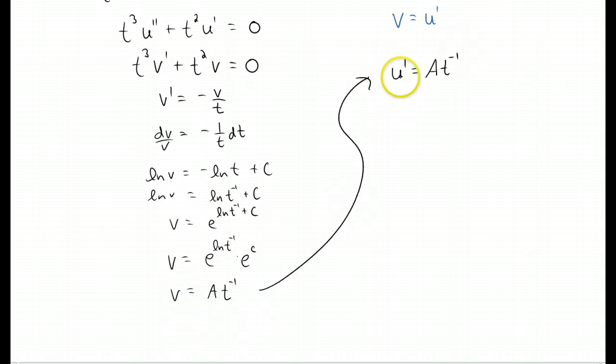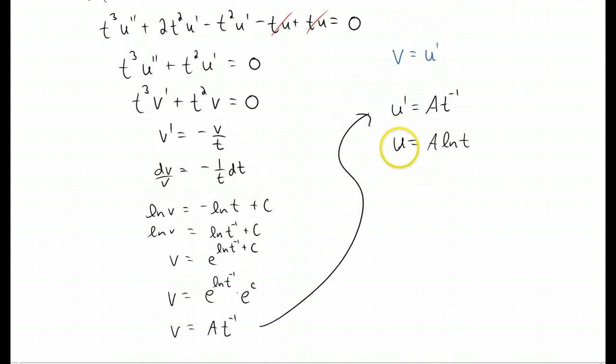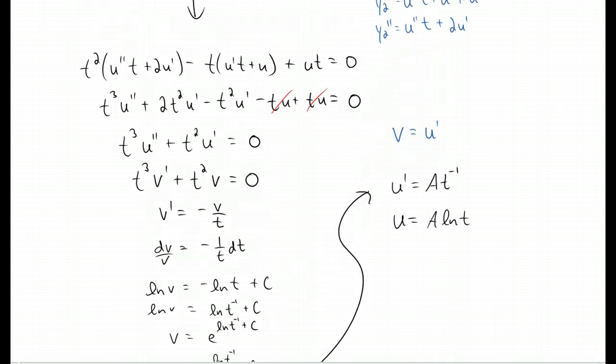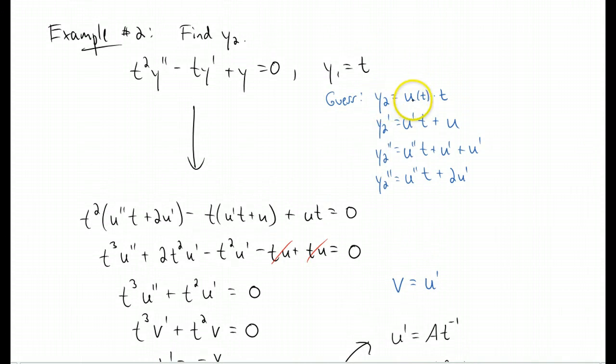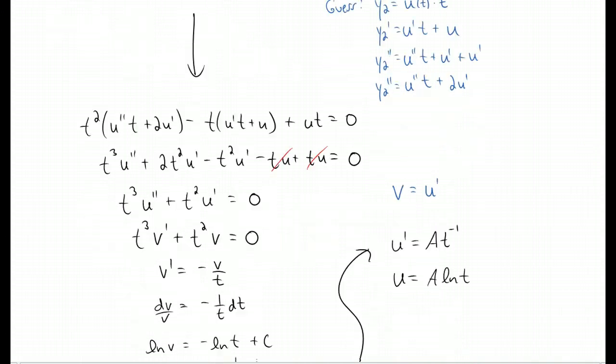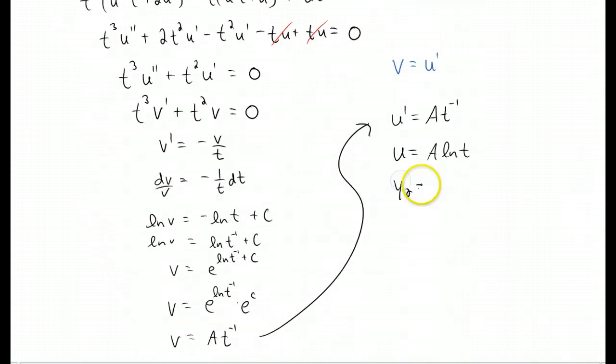I substitute v is u prime, and then to find u, all you have to do is integrate with respect to t. And now that we have u, we can find that y2 is just u times t. So that's just y2 is at natural log of t.